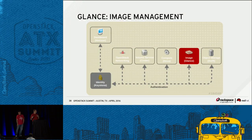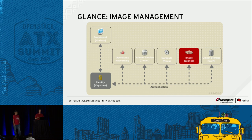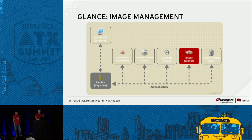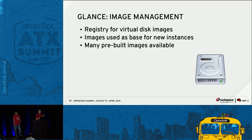Now that we have a user, let's start working towards getting a virtual machine up and running. The first thing we talked about was image management — Glance houses these pre-built images. We don't want to wait for an installation to run for each virtual machine when it launches. It's very boilerplate to do this installation, so if we do it ahead of time and put a generic image into Glance, when we launch it all we have to do is make a couple little tweaks to make it unique in its networking or identity as a machine.